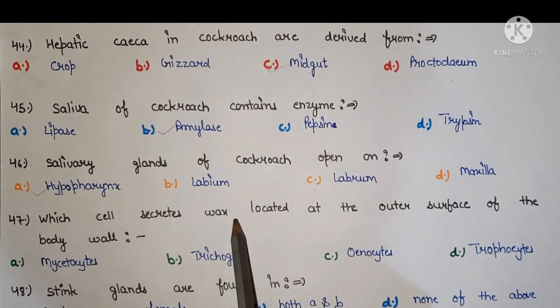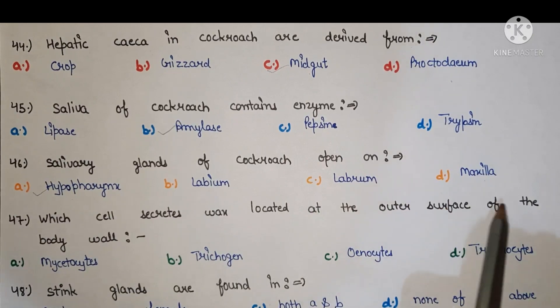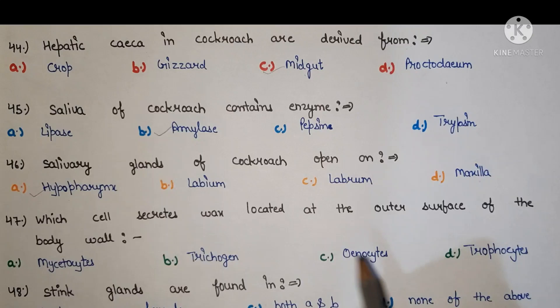Next, which cell secretes wax located at the outer surface of the body wall? The right answer is oenocytes.